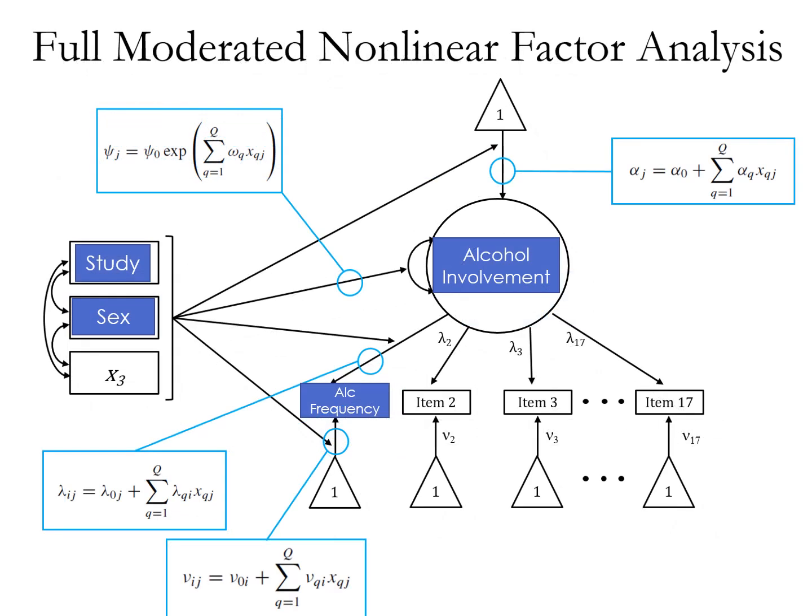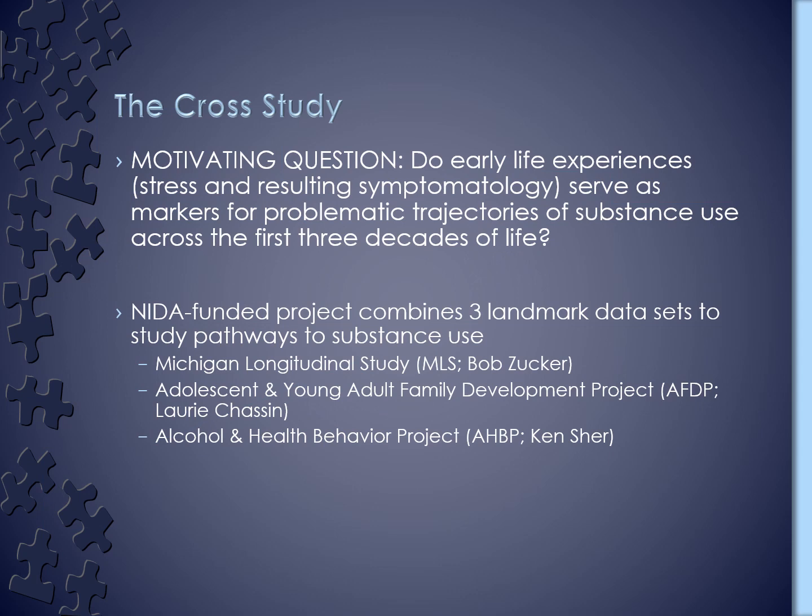So when you put all that together, you have a model where you're able to take into account differences across studies and other individual difference factors in overall rates of alcohol involvement, in the extent to which items are functioning differently in terms of how easy or hard they are to endorse across samples and individuals. You can also look at differences in variance of alcohol involvement across studies as well as in factor loadings. So you have these four main ways to think about study and other covariate differences in how your model is performing. That's the full moderated nonlinear factor analysis, and it can become complicated quite quickly, but we really want to be focused on what factors are key to understanding measurement differences given the studies and constructs we're working with.